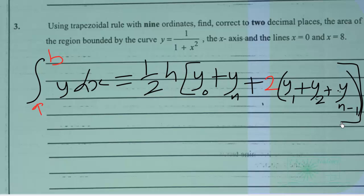So let's see how we can do that. We're given nine ordinates, we need to find a value of h. So h will be equal to b minus a over n minus 1, where n is the number of ordinates.